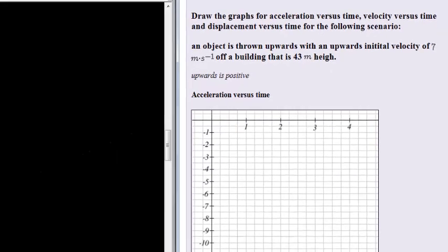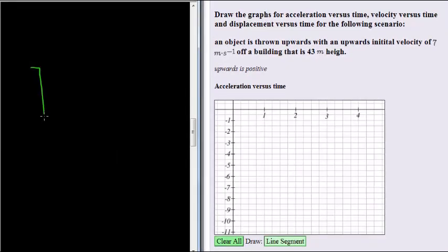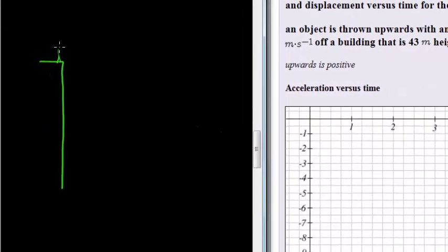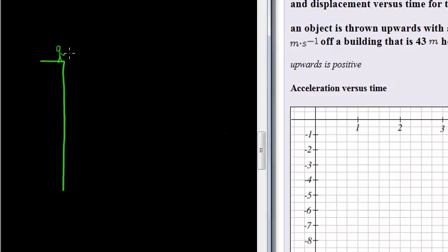So let's briefly draw that. Here's our building. That's a skew building. Here's our building. A person standing here throwing something upwards into the air. It goes up and then it seems to fall back down towards the ground.